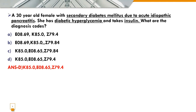The correct code is E08.69. We also consider E09 codes for drug or chemical-induced diabetes. For the question involving glycemic drugs and insulin, option C is eliminated. The correct answer is option D: K85.0, E08.65, and Z79.4.